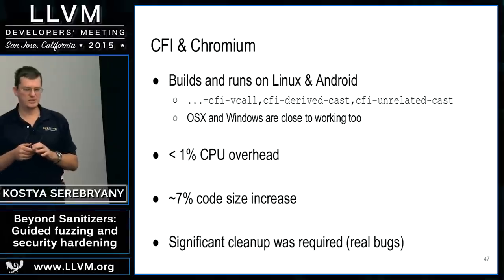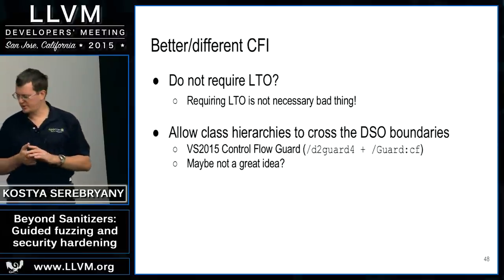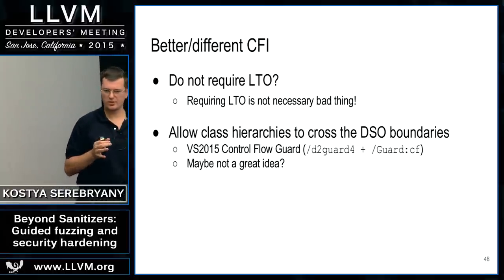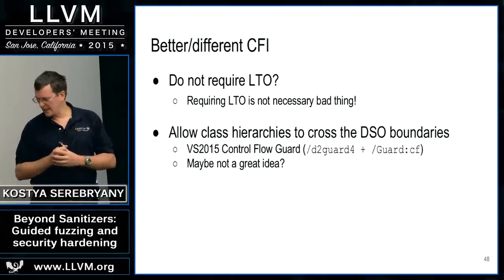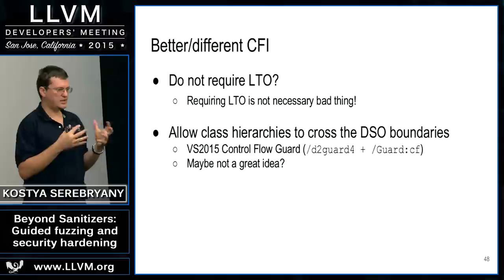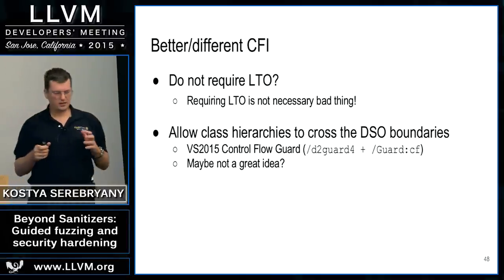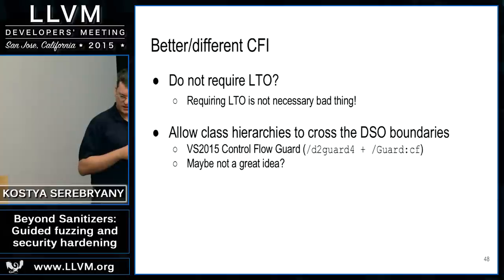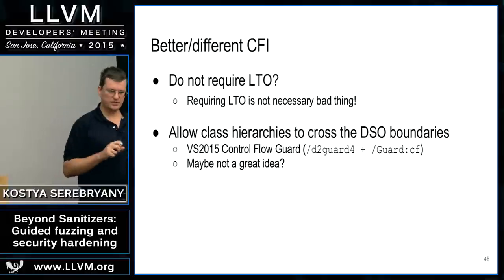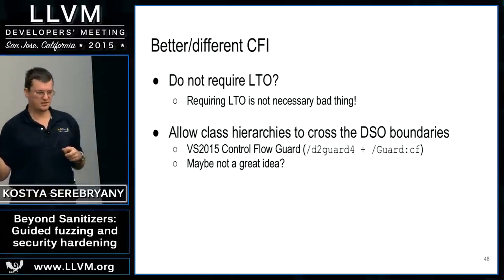This is not the only possible approach to control flow integrity. An interesting question is whether we can get rid of the LTO requirement, since not all applications are LTO-friendly — though forcing LTO also brings benefits like better optimization and code size. Visual Studio 2015 has a somewhat similar technique called control flow guard: it is slightly weaker, slightly easier to use, and does not require LTO. However, just a couple of weeks ago a blog post claimed this mitigation was bypassed.